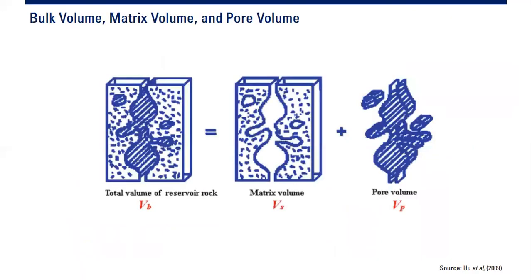This is another representation: we have the total volume of reservoir rock, also called bulk volume. Within it we have grain volume, also called matrix volume. Bulk volume minus grain or matrix volume gives us pore volume Vp.